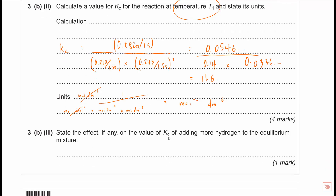Finally: what is the effect on KC of adding more hydrogen to the equilibrium mixture? No effect — because only temperature changes the value of KC, not changing concentrations. Hopefully that's been helpful. There are plenty more past paper questions you can look at. Let me know if there are any problems, and good luck.